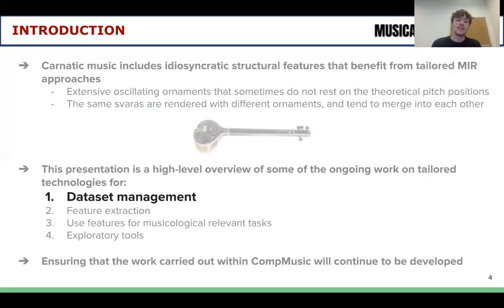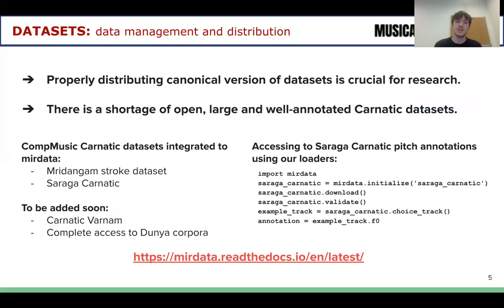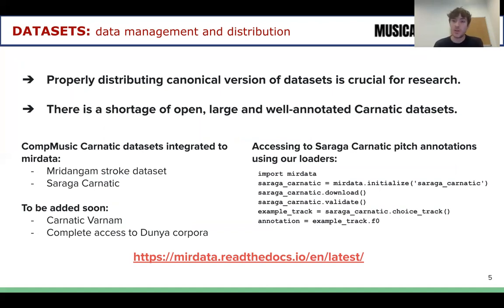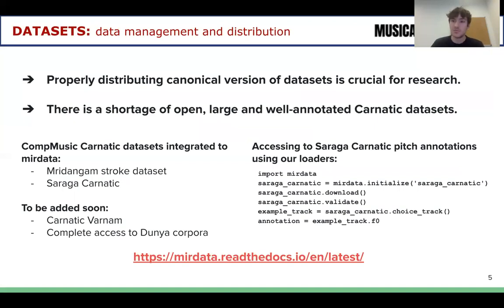Let's now talk about the improvements we have performed on dataset management. Properly distributing canonical versions of datasets is crucial to make our research reliable and replicable for other researchers. There is a shortage of open, large, and well-annotated datasets for the case of Carnatic music.